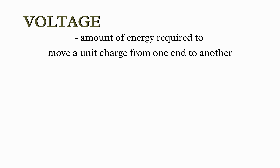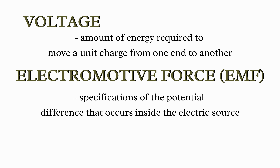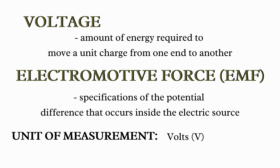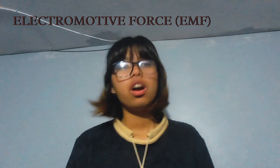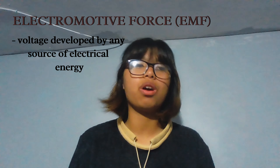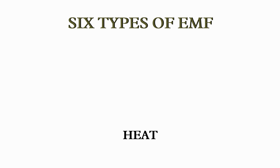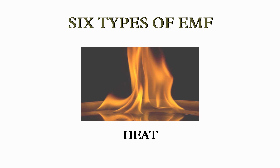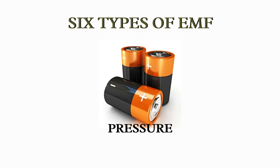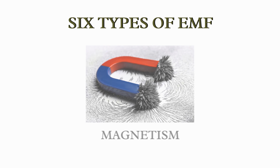Voltage is the amount of energy required to move a unit charge from one end to another. Electromotive force (EMF) is the specification of the potential difference that occurs inside the electric source. EMF and voltage have the same unit of measurement — volts. EMF is a voltage developed by any source of electrical energy, such as a battery or photovoltaic cell. There are six types of EMF: heat, light, friction, chemical, pressure, and magnetism.